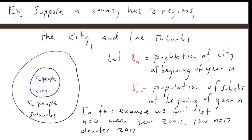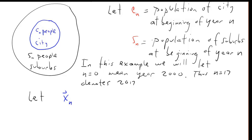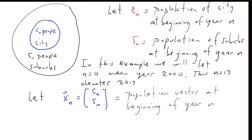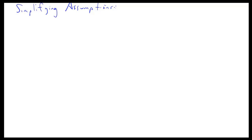In this example, we'll let n=0 mean year 2000, so n=17 denotes year 2017. Let X_n denote the vector (C_n, S_n), called the population vector at the beginning of year n. For example, X_3 is the population vector at the beginning of year 2003, including the city and suburb populations.